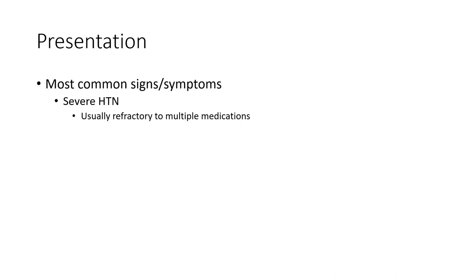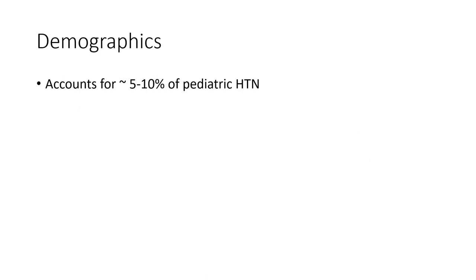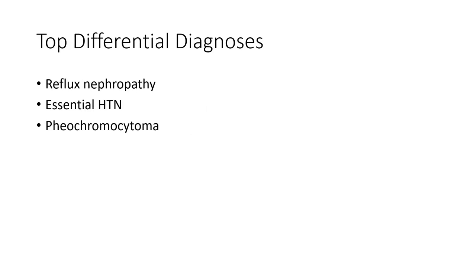Presentation. The most common signs and symptoms include severe hypertension, usually refractory to multiple medications. Demographically, it accounts for 5–10% of renal hypertension. Top differentials include renal artery stenosis, renal nerve pathology, essential hypertension, and pheochromocytoma.